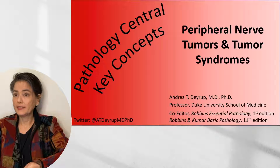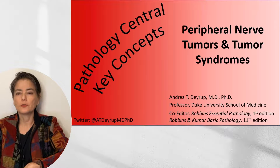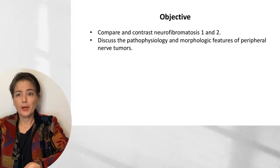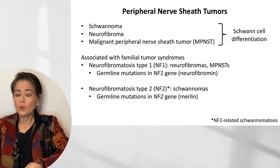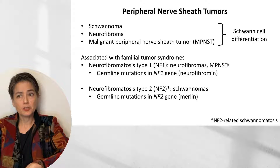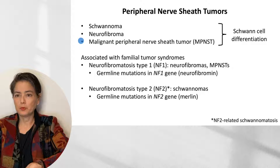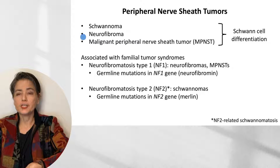Welcome to Pathology Central Key Concepts. The topic of this video is peripheral nerve tumors and tumor syndromes. I will be comparing and contrasting neurofibromatosis type 1 and 2, as well as discussing the pathophysiology and morphologic features of the peripheral nerve sheath tumors. When we talk about peripheral nerve sheath tumors, we are talking about three entities: Schwannoma, neurofibroma, and malignant peripheral nerve sheath tumors, or MPNSTs. All three of these show Schwann cell differentiation, which is why they are referred to as peripheral nerve sheath tumors.